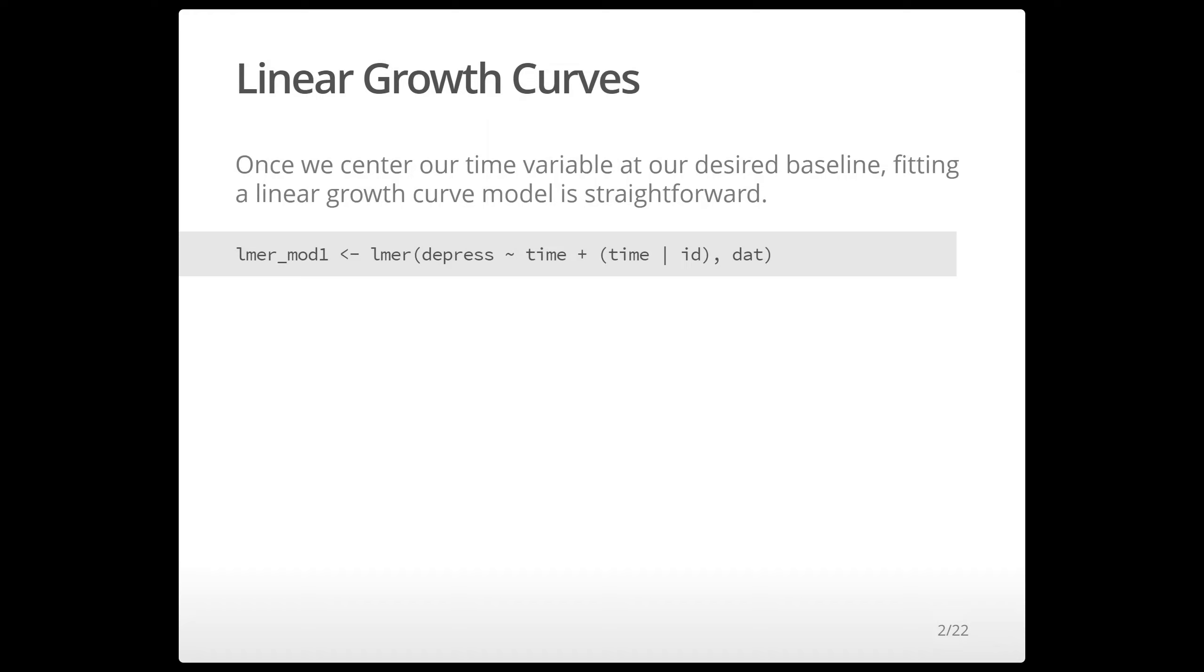Linear growth curve models are pretty straightforward in HLM. The main thing we're doing is centering our time predictor at our baseline and then using time as a predictor. In this case I'm including random slopes based on the spaghetti plot that I saw.